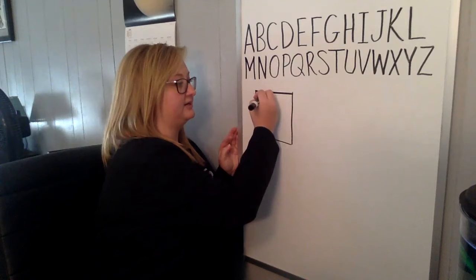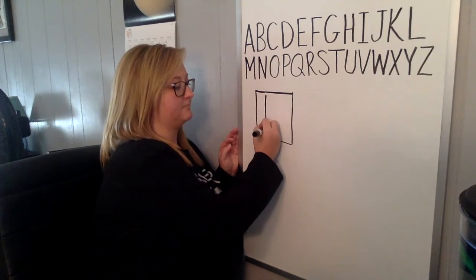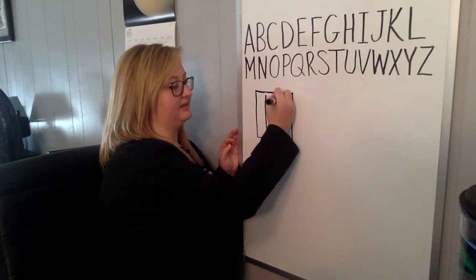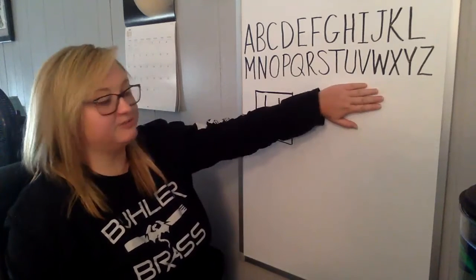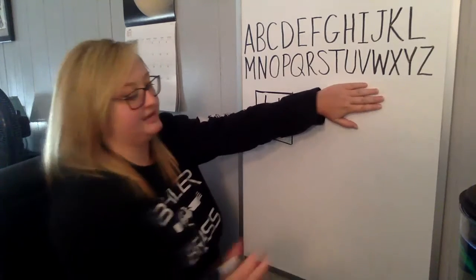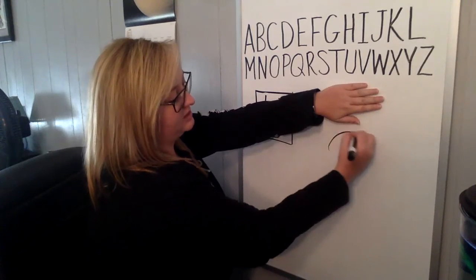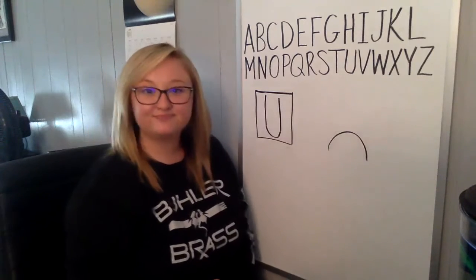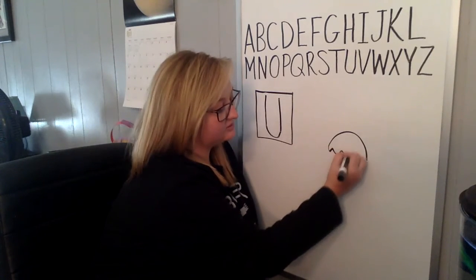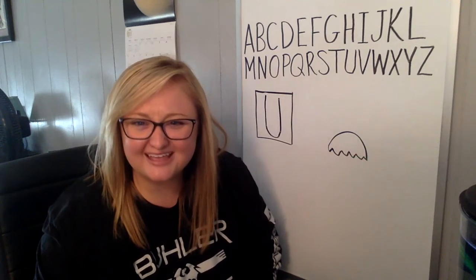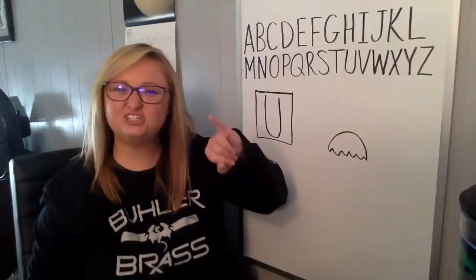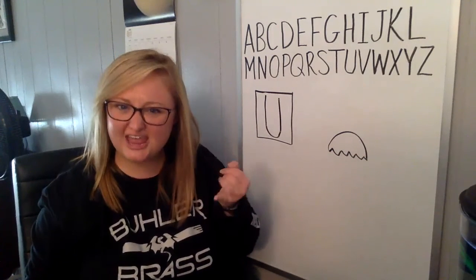to make the letter U, you need a big line down, little curve, and a big line up. Good job, okay, now I need you to leave some space at the top, okay? And underneath your space, I need you to make a curve. And under your curve, I need some squiggles. No, we're not going to make a jellyfish. Jellyfish starts with J, not U. Now,